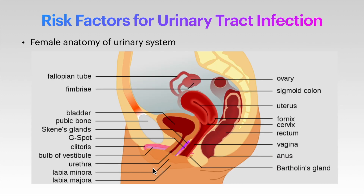Women are at higher risk of UTI because of female anatomy. The anus, vagina and urethra are all closer to each other, increasing the chances of spread of infection. Also, a woman has a shorter urethra compared to men, so spread of infection into the bladder is much quicker in females.